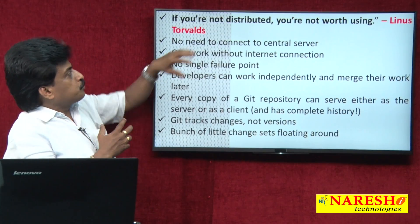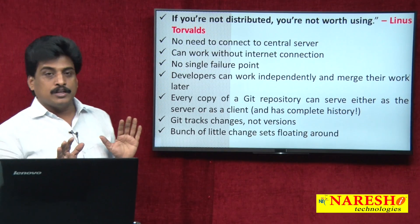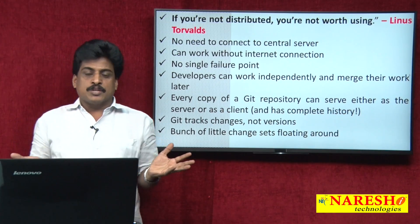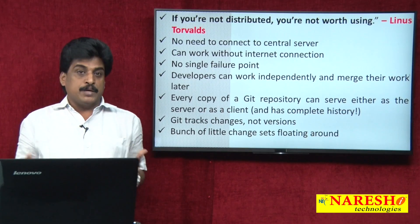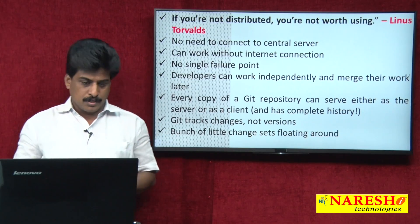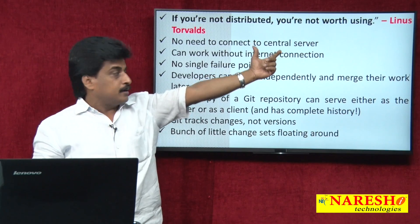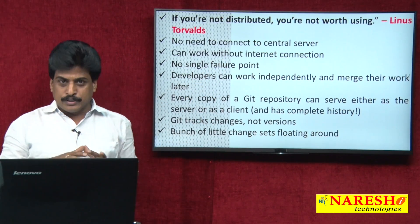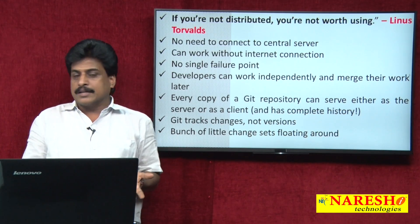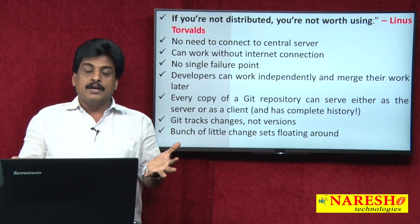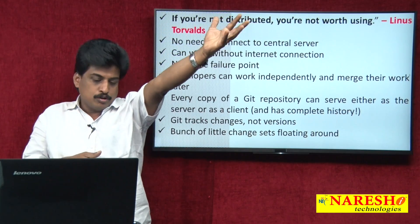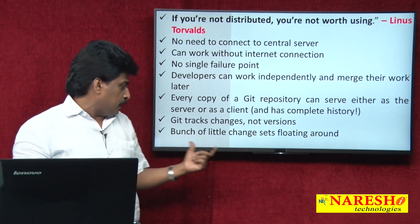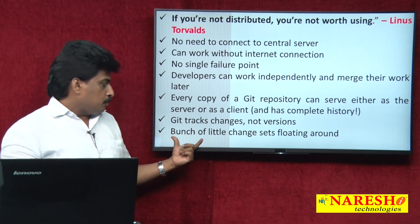Linus Torvalds stated clearly: if you are not distributed, only resources available locally are accessible and more people cannot access them. With Git, no internet connection is required for local work, and there is no single point of failure — even if your local computer fails, every document and version is safe at the server level. Every copy of the Git repository is stored at the server level, and Git tracks changes, not versions.